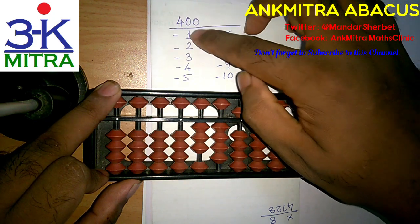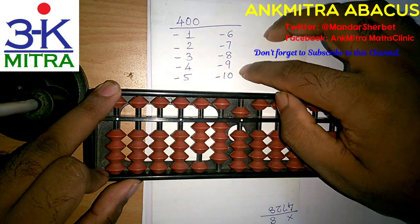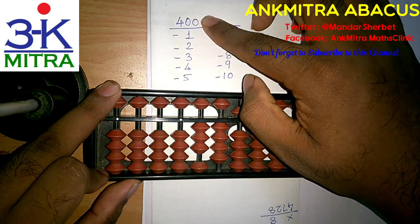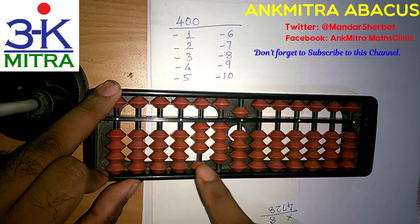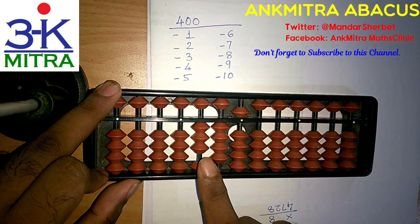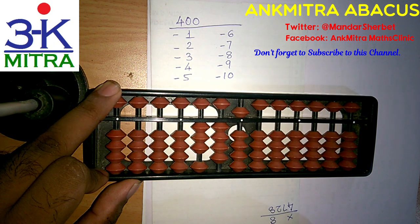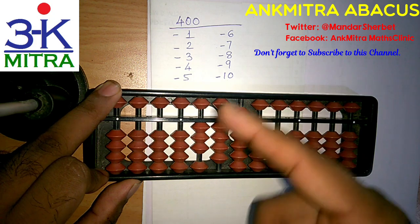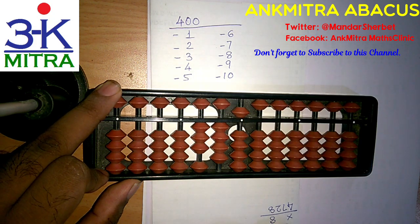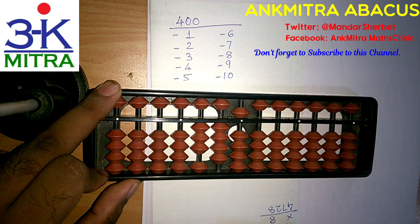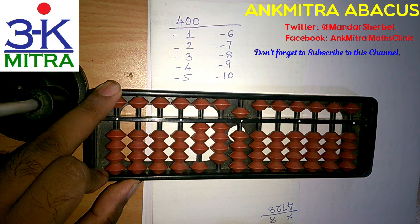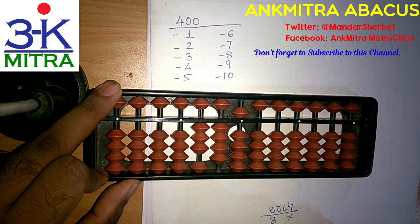So after subtracting all these numbers from 1 to 10 from the initial starting number of 400, the answer that we are left with is 345. I hope this subtraction and all the different formulas we had to use are clear. Please do try it out once after watching this video. In case of any difficulty you can come back and watch this again. Thank you.